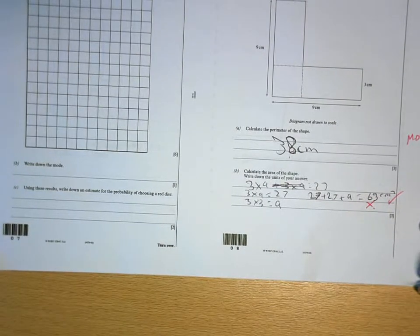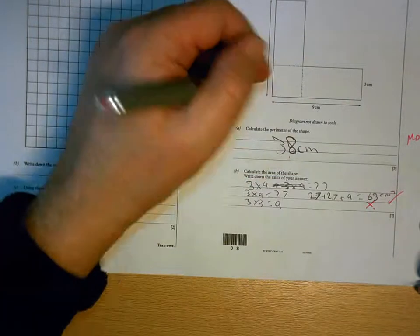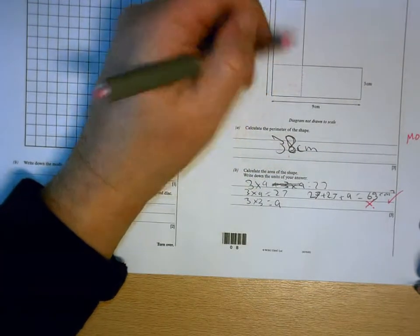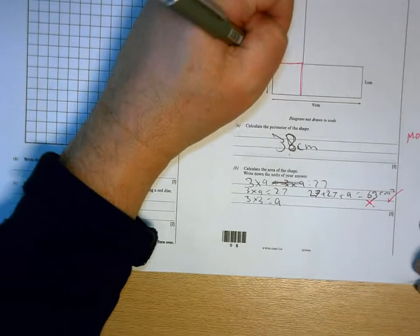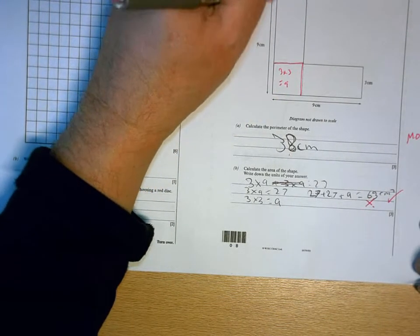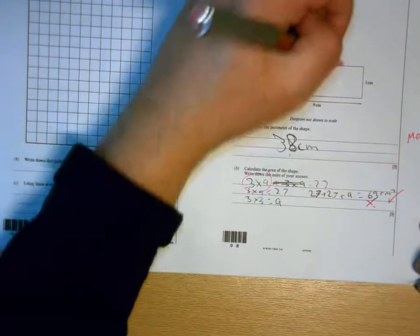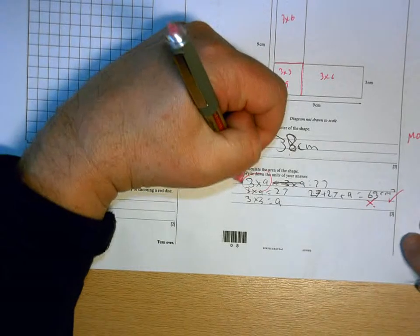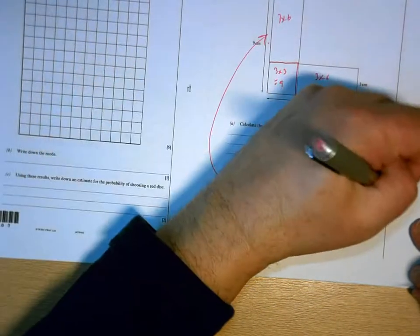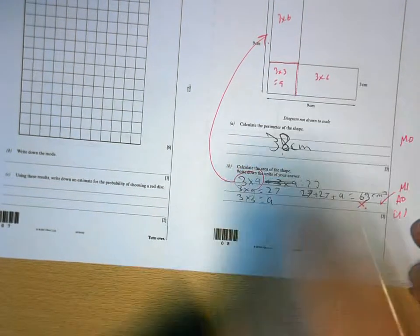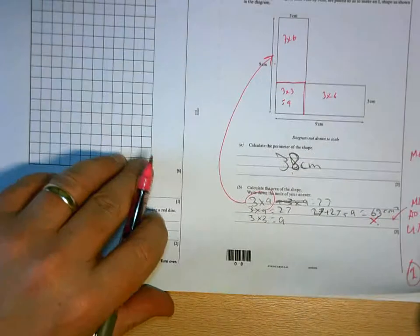Now, you've worked out that that one is 3 times 3, so if that one is 3 times 3, then that one is 3 times 6, not 3 times 9, and so is that one. So, your method of calculating the areas is right, but your maths is wrong, and units are right. So, you'll get 2 for that.